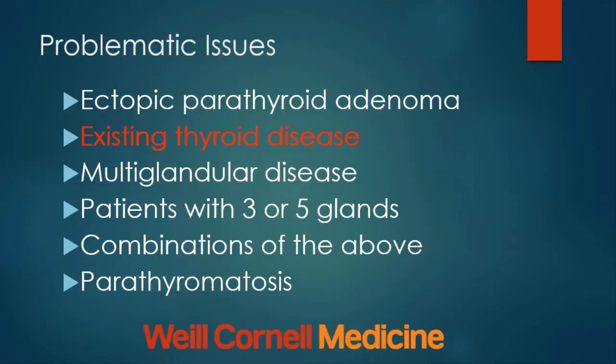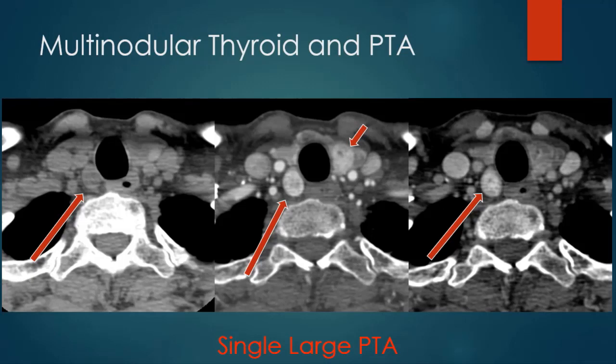The next problem issue: patients who have existing thyroid disease. This patient had a multi-nodular thyroid but hyperparathyroidism. There is a fairly large lesion in the right tracheoesophageal groove that is hypodense, enhances uniformly, but with not much washout. Also note in the left thyroid gland there is an intrathyroid lesion — intrathyroid adenomas do occur. My interpretation was likely a single large parathyroid adenoma, but if parathyroid hormone levels did not fall on resection, the left intrathyroid lesion could represent another parathyroid adenoma. This was surgically confirmed as a single large parathyroid adenoma, and the thyroid nodules were left alone.